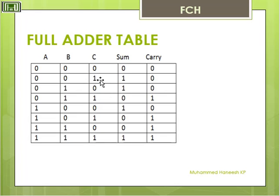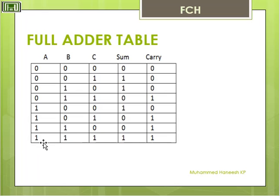If you have an odd number of 1s, Sum is equal to 1, then Carry is equal to 0. If you have an even number of 1s, Sum will be 0. Odd number of 1s, Sum will be 1. In this special case, 1, 1, 1: there is an odd number of 1s so Sum is 1, and one remainder so Carry is 1.